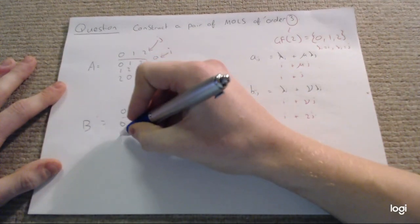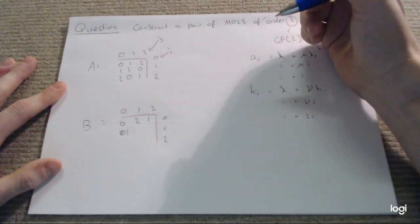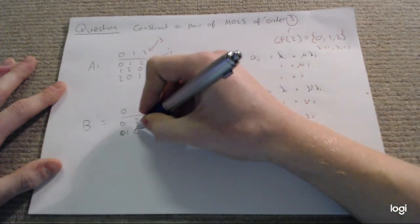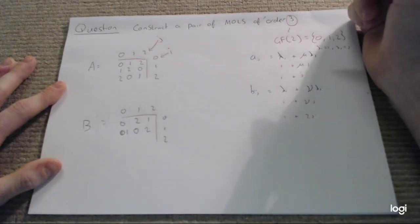1 plus 2 lots of 0... oh sorry, that should be a 1. 1 plus 2 lots of 1 gives us 3, which is equivalent to 0, and 1 plus 2 lots of 2 gives us 5, equivalent to 2.